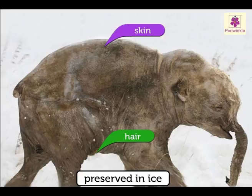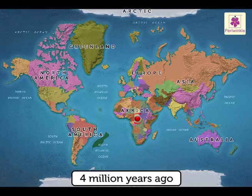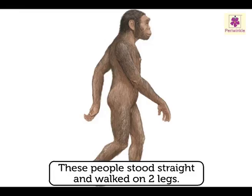From apes to man — this is how our human ancestors looked. Fossil remains found in Africa show that about 4 million years ago, human-like creatures lived. These people stood straight and walked on two legs.